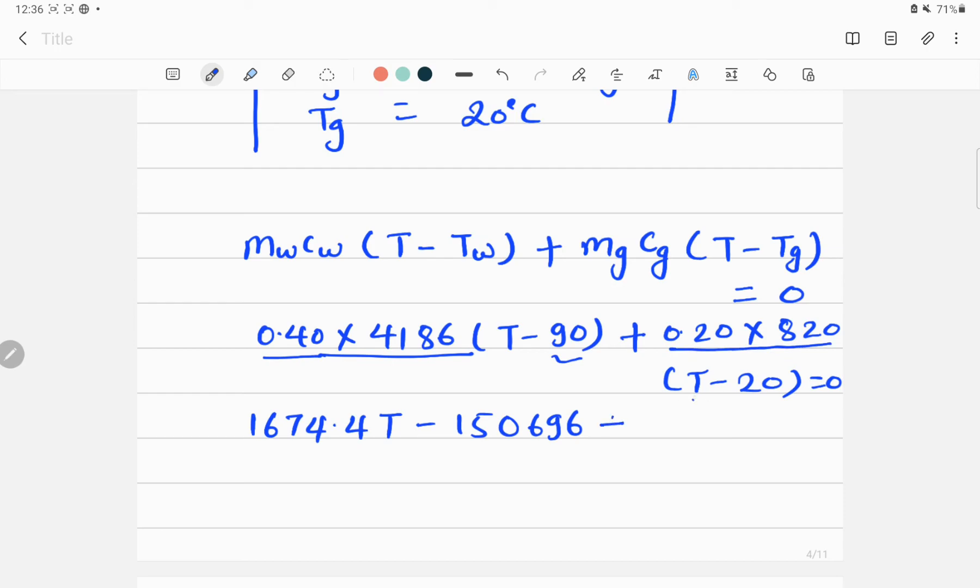Similarly, when I multiply this number with T, this will provide me 1674.4T, and 0.2 multiplied by 820 times 20 will give me 3280 plus 164T, is equal to 0. So once we add these common terms, then I will get 1842.4T, which is the final temperature.